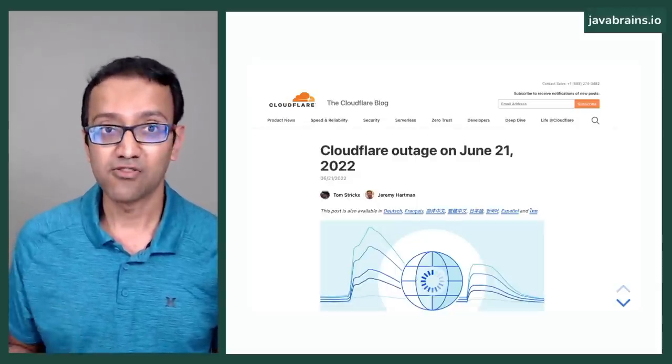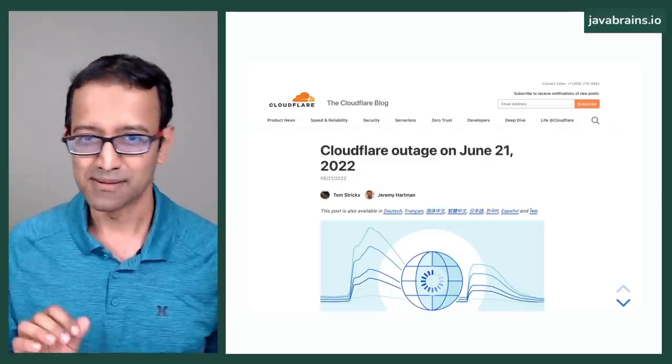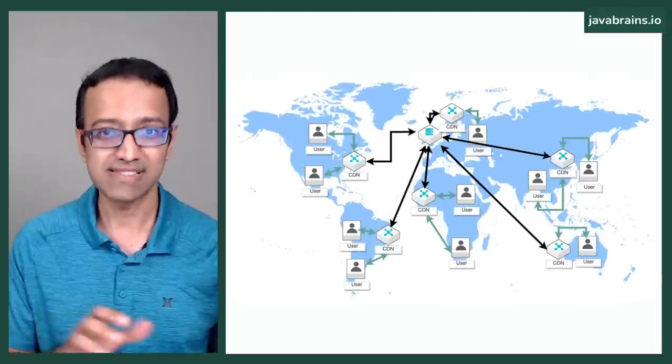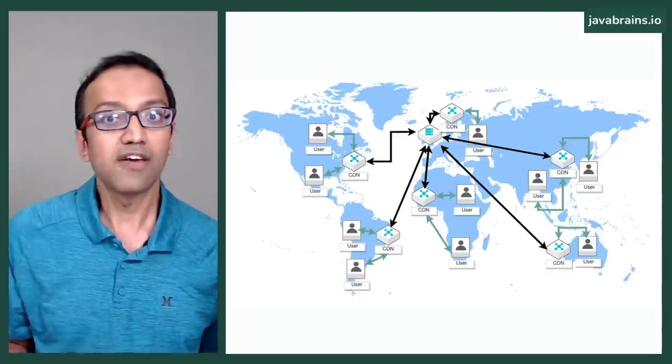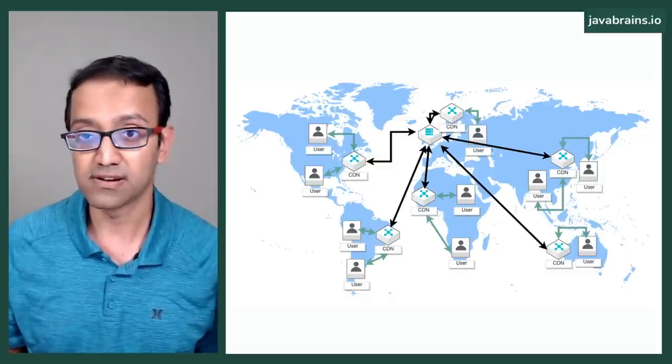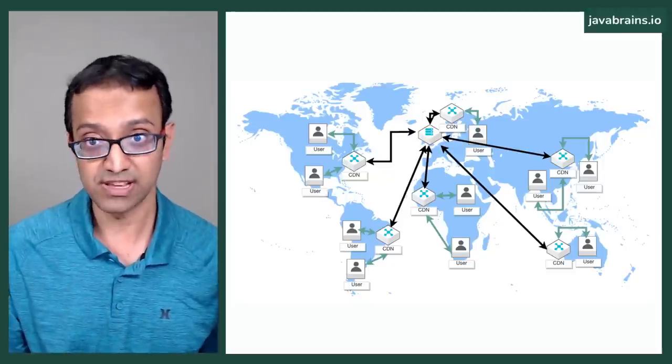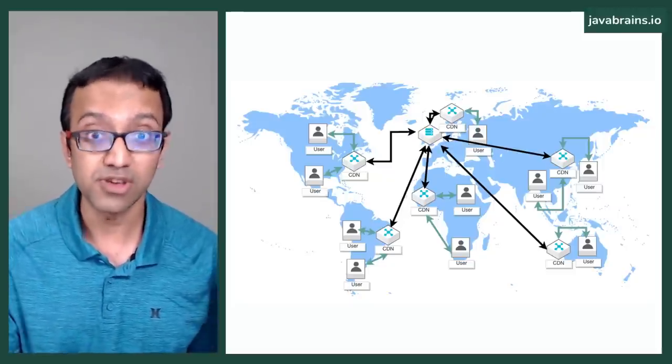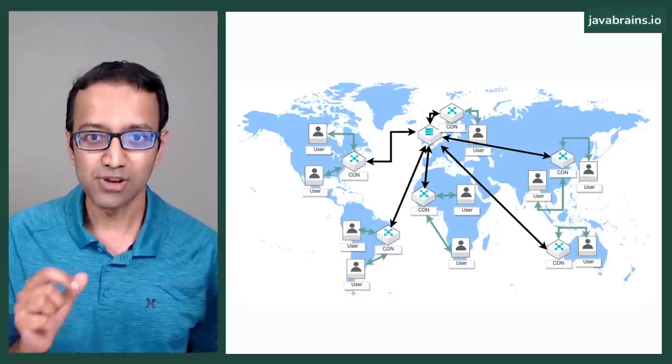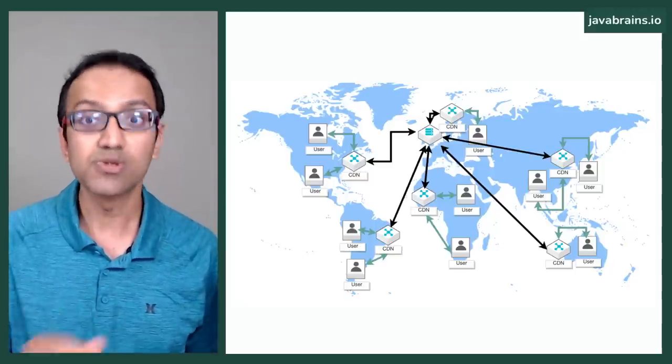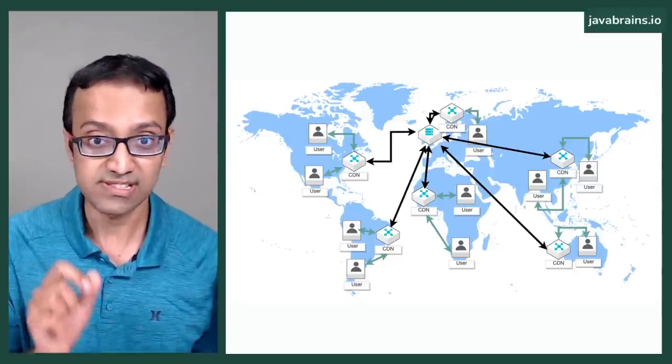So what caused the outage? If all that Cloudflare is doing is hosting static files, how could they mess that up? Here's the thing: in addition to hosting static files, there is one other thing that Cloudflare is doing. It's not enough for Cloudflare to just have duplicate copies of static assets all over the world - they have to make sure that when you make a request for a resource, you get the data center location that's closest to you. How does your request go to the best path or the fastest path to get to the static resource that's closest to you?